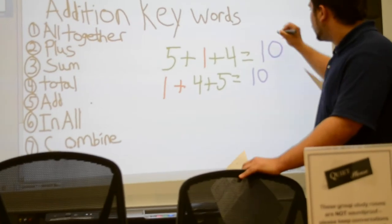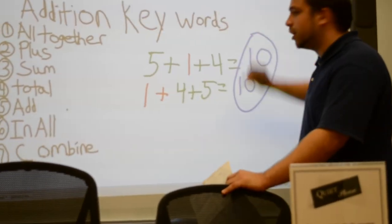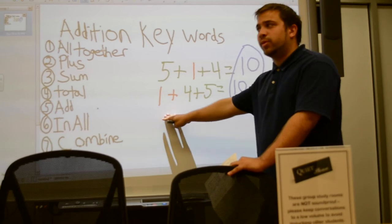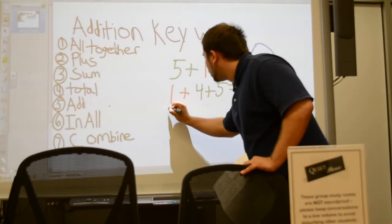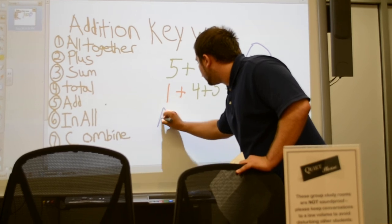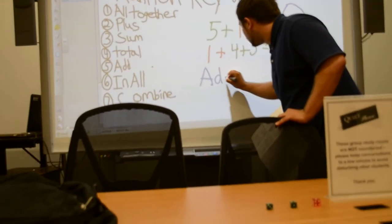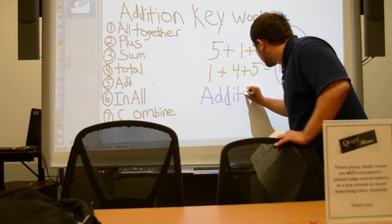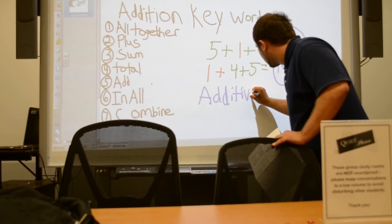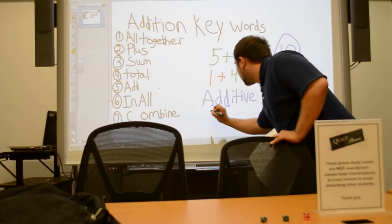You are still getting 10 as your answer and you are switching around the numbers. This is called the additive inverse property.